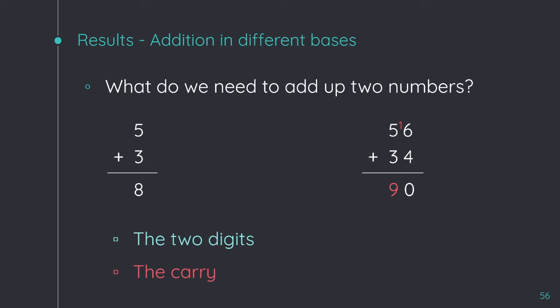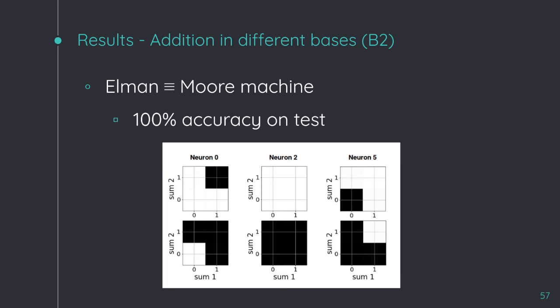When the Elman network is trained on the addition on base 2, it gets 100% of accuracy on the test, and it behaves as a Moore machine. Look at these pictures. They represent the activation of each active neuron when there is, or not, a carry. The top picture is the activation when there isn't a carry, and the bottom one is the activation when there is a carry. Black color is minus 1, and white is 1.